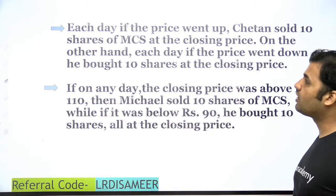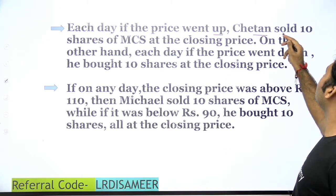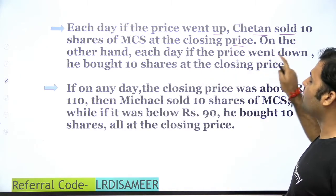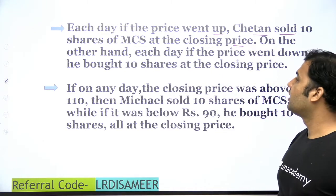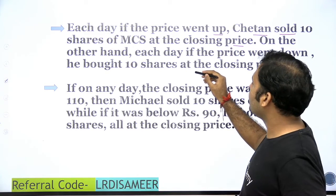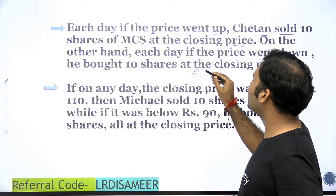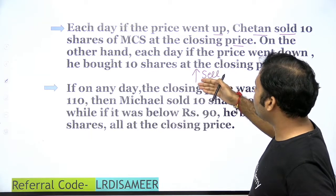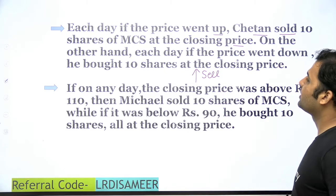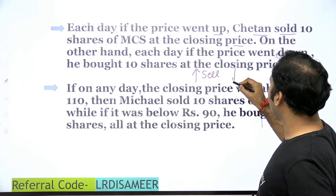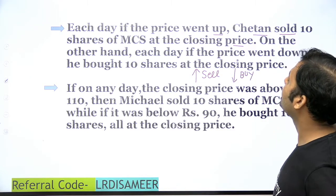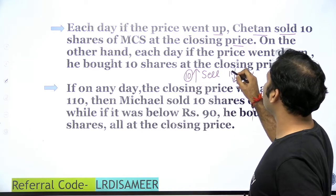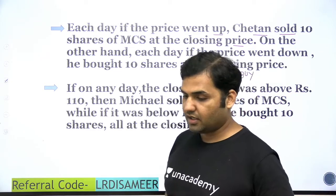Two important points: each day if the price went up, Chetan sold 10 shares of MCS at the closing price. On the other hand, each day if the price went down, he bought 10 shares at the closing price. So Chetan's strategy is: price goes up → Chetan sells 10 shares; price goes down → Chetan buys 10 shares. This is Chetan's trading strategy.